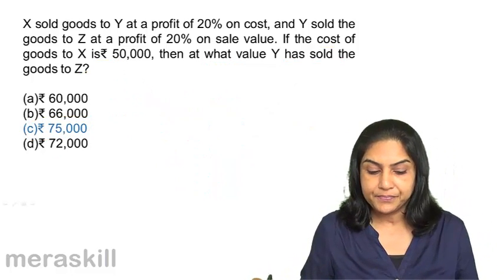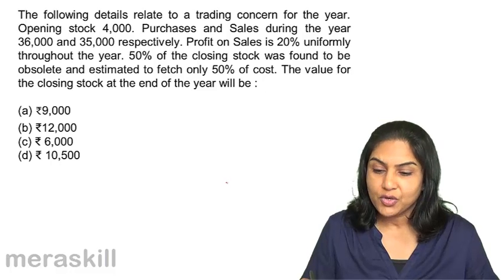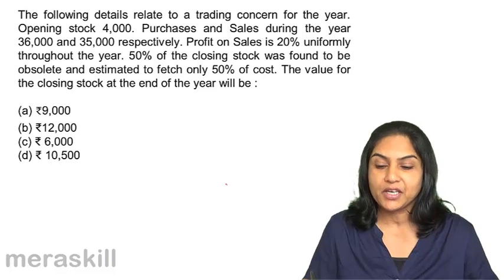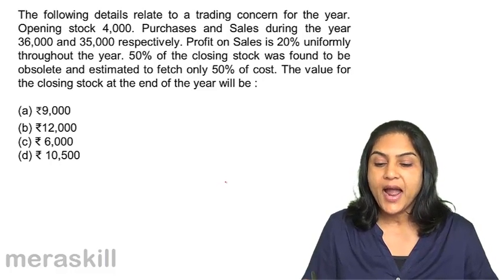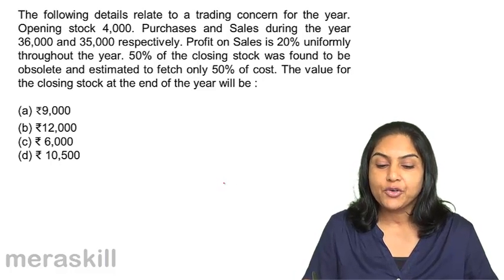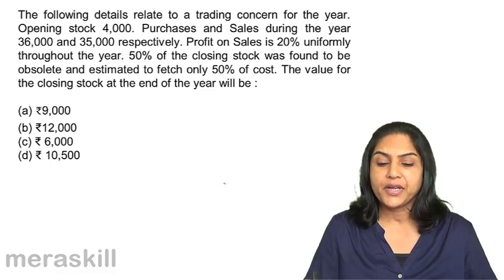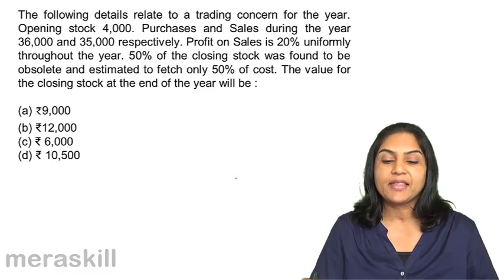Next question: The following details relate to a trading concern for the year — opening stock 4,000, purchases and sales 36,000 and 35,000 respectively, profit on sales is 20% uniformly throughout the year. 50% of the closing stock was found to be obsolete and estimated to fetch only 50% of the cost. The value of closing stock at end of year will be: a) 9,000, b) 12,000, c) 6,000, d) 10,500.